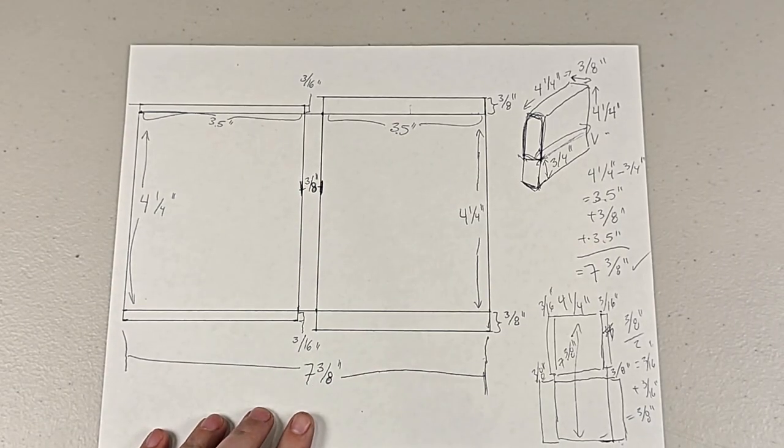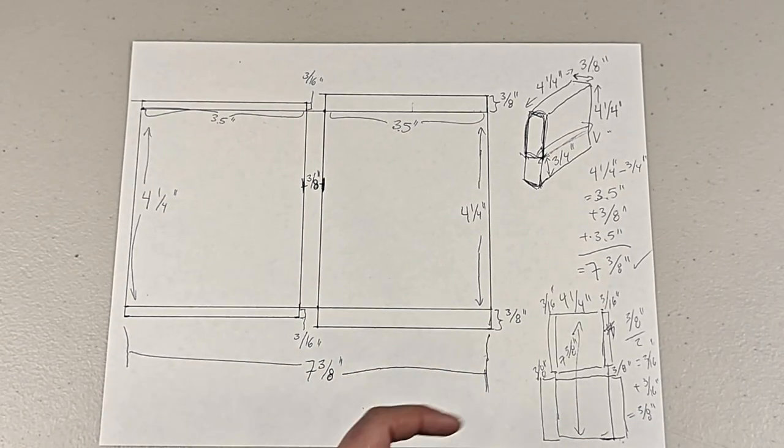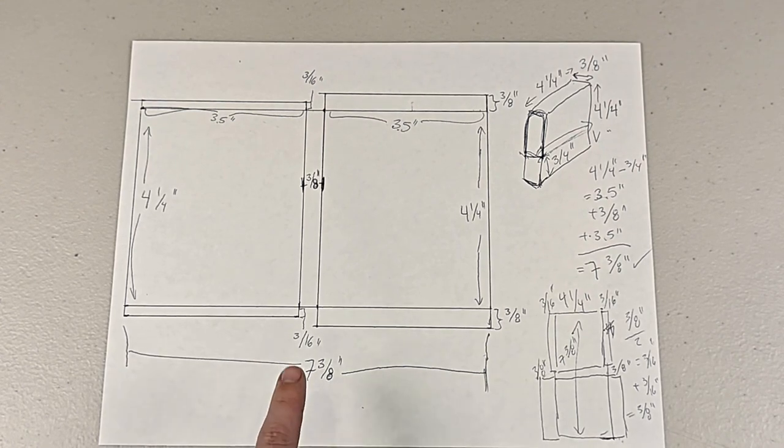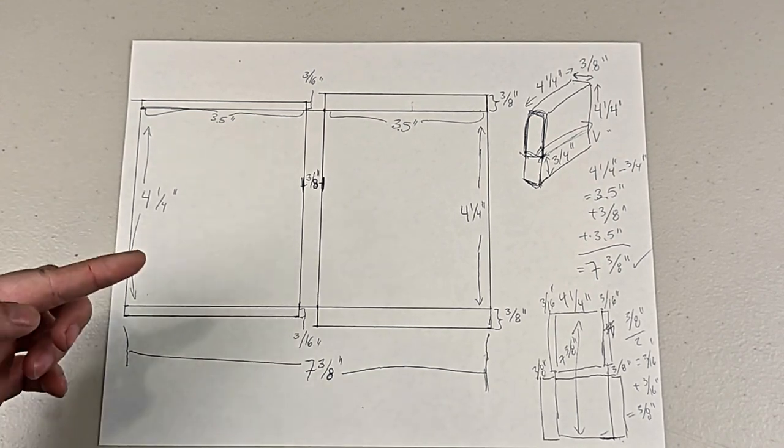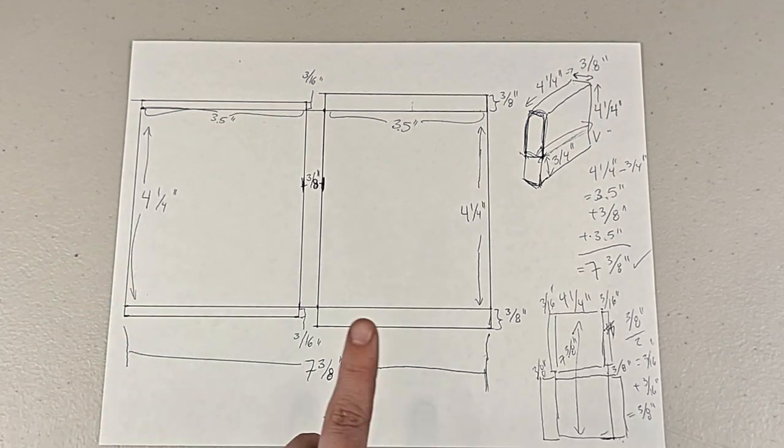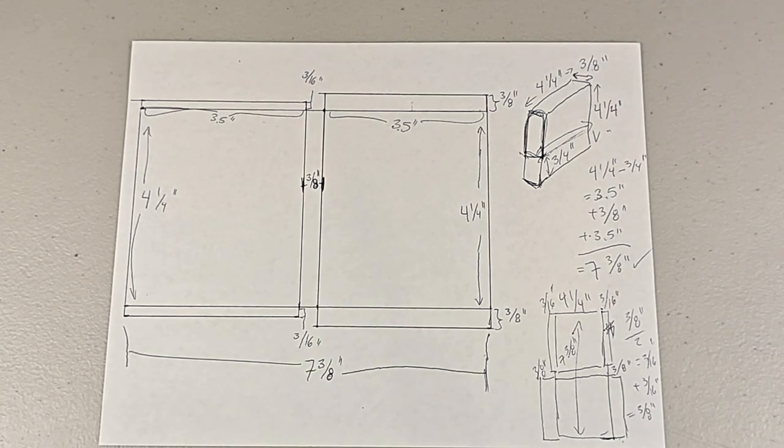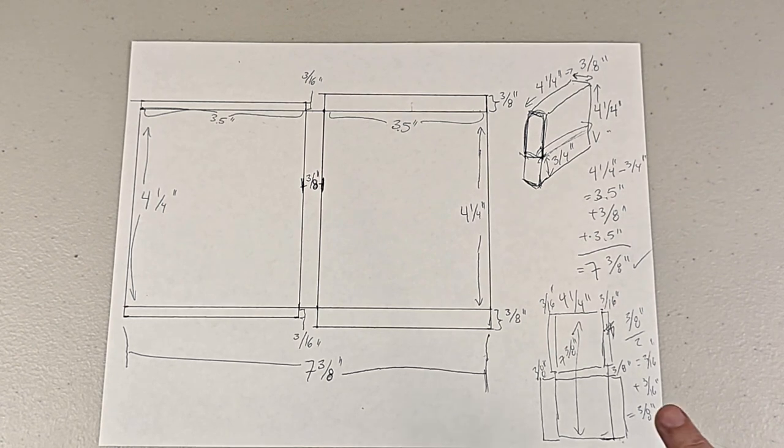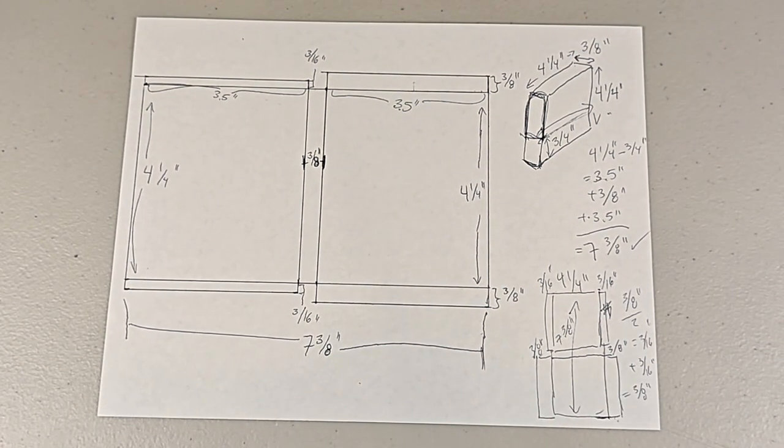Now here's the full scale pattern. You can see the full length of seven and three eighths inches. The back is three and a half inches wide with a three sixteenth inch seam allowance. The front is three and a half inches wide with a three eighths inch addition, and the center three eighths inches is without any additions. Now we'll cut it out to use as our pattern.